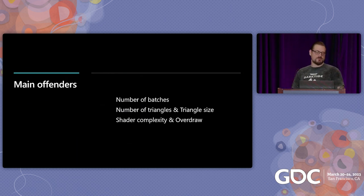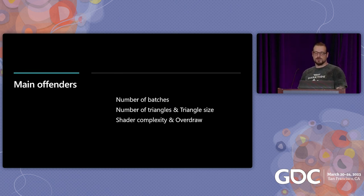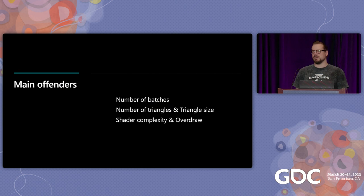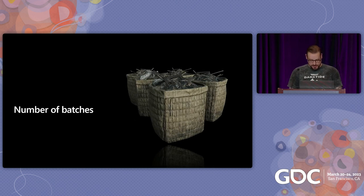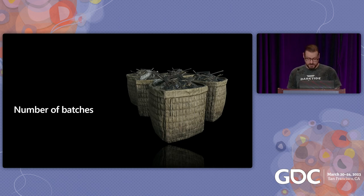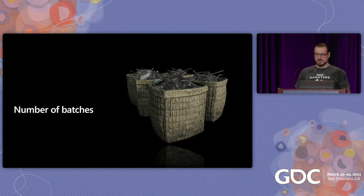Let's look at the main offenders. We're going to focus on a few things: the number of batches, the number of triangles and — more importantly — triangle size, shader complexity, and overdraw. Starting with number of batches: everything that gets processed and rendered in-game is called a batch. The optimization goal is to create as few batches as possible.